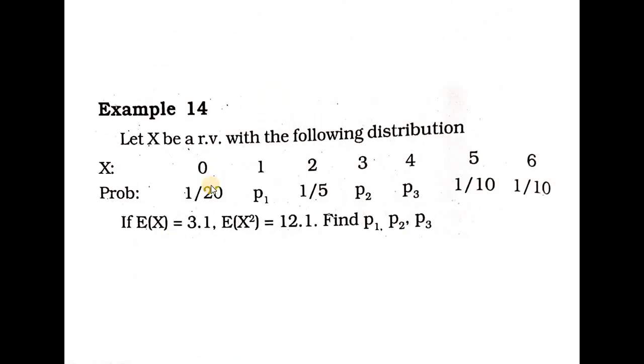For the next problem, we have a discrete distribution. E of X equals the summation of x times P of x: 0 times 1 by 20 plus 1 times P1 plus 2 times 1 by 5 plus 3 times P2. The answer for E of X is 3.1. So we get the equation: P1 plus 3P2 plus 4P3 plus 2 by 5 plus 1 by 2 plus 3 by 5 equals 1, giving a value equal to 1 by 6. That is equation number 2.